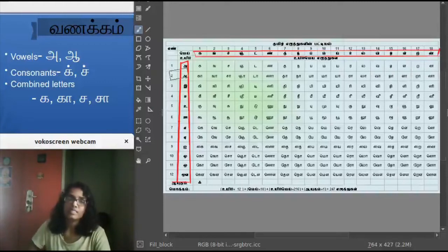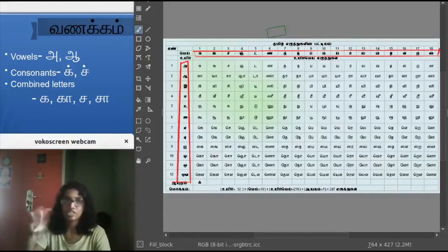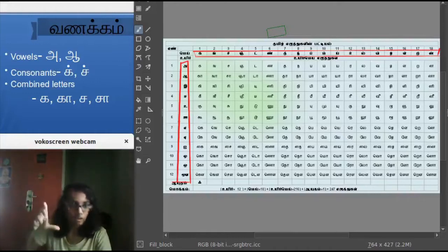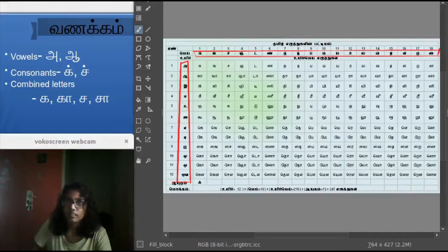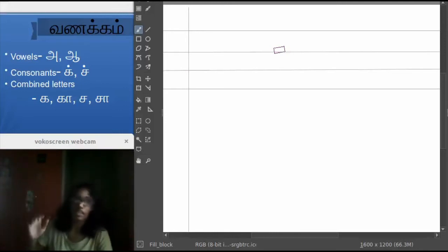Today we will be seeing two consonants, two vowels and four combined letters. The first sound what we will be seeing now is A sound. So in Tamil we have two notes for each sound. For A sound we have a short note and a long note. A sound in Tamil is A short note and Ā is a long note.